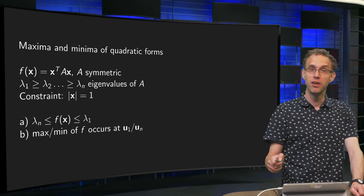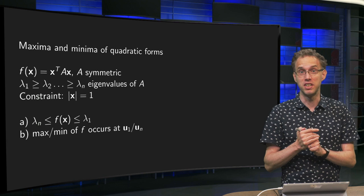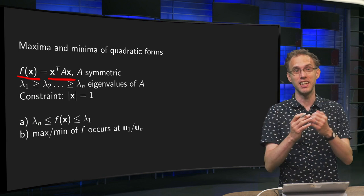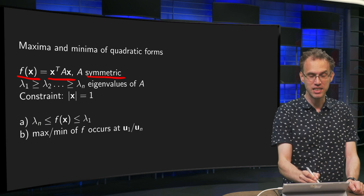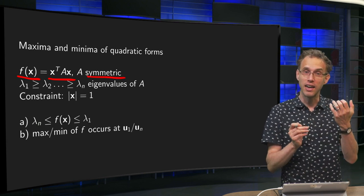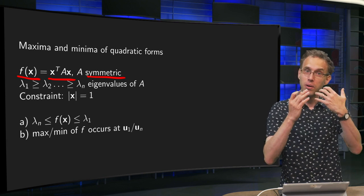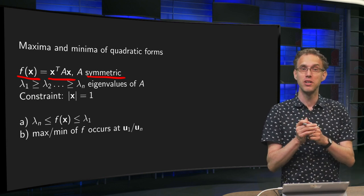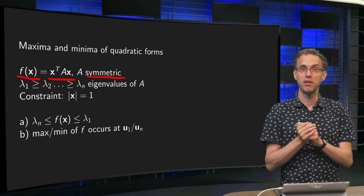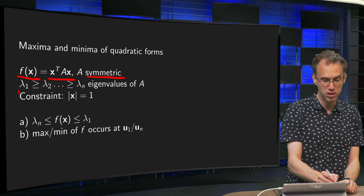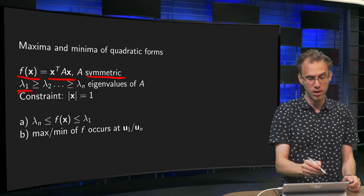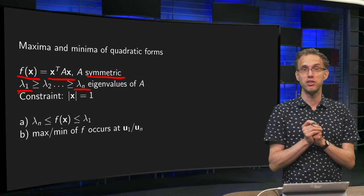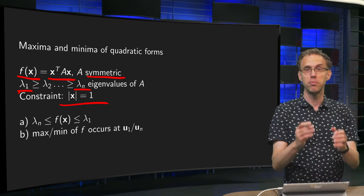We are looking for maxima and minima of quadratic forms. We have f(x) as a quadratic form, written as x-transpose times A times x, where A is a symmetric n-by-n matrix and x is a vector. Since A is symmetric, all eigenvalues are real. We order them with the biggest first — lambda_1 down to lambda_n, the smallest. We will find an optimum of this function with the constraint that the input variable has norm equal to 1.